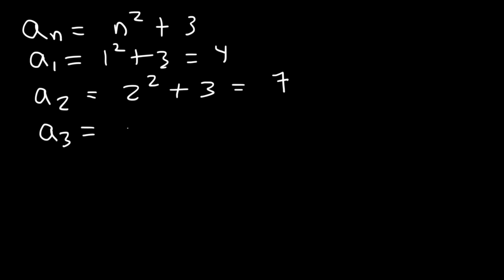The third term is 3 squared plus 3, which is 9 plus 3, that's 12. The fourth term is 4 squared plus 3, that's 16 plus 3, that's 19.